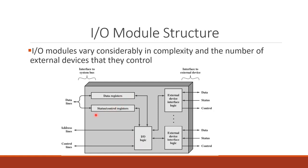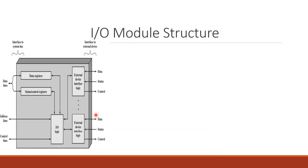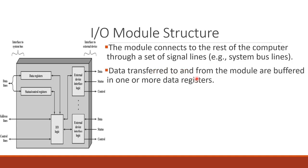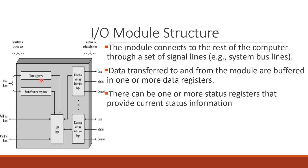The IO module has a data register, control register, and connects to the rest of the computer through a set of signal lines — data, address, and control lines, which are the system bus lines. Data transfer to and from the module is buffered in one or more data registers. There can also be one or more status registers that provide current status information.